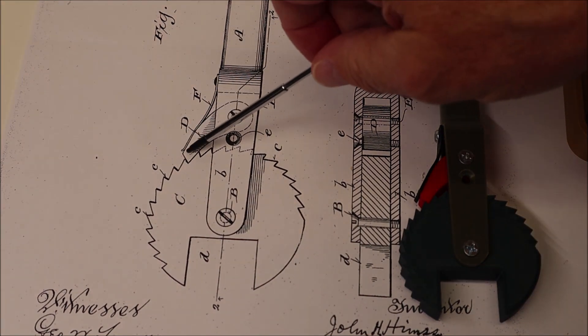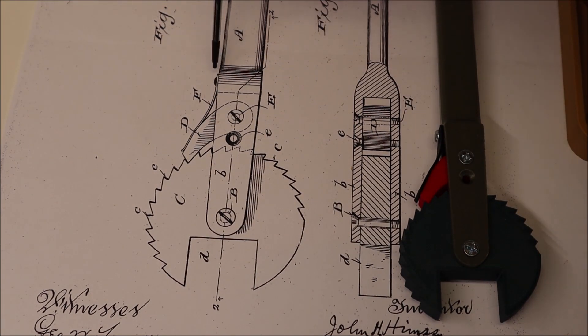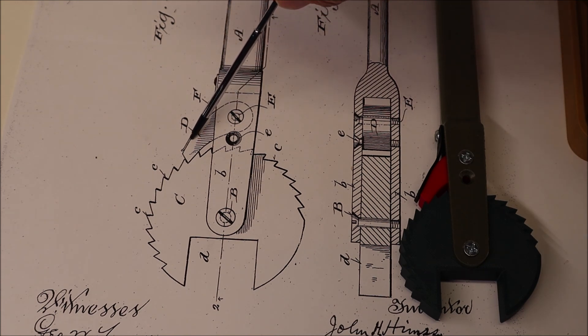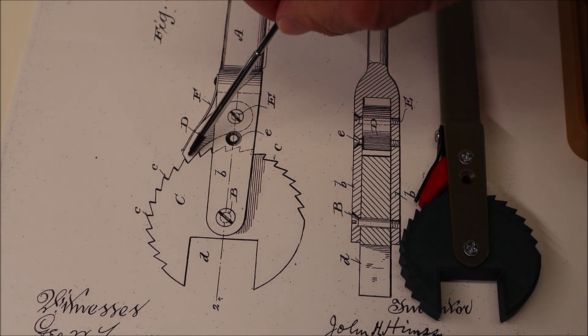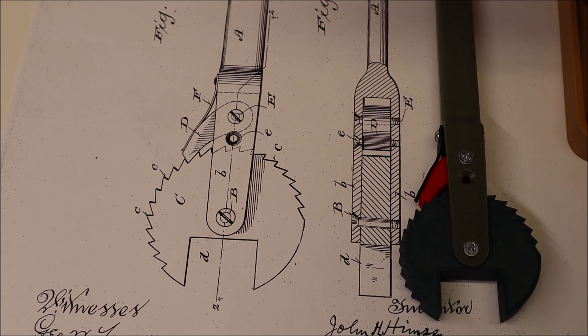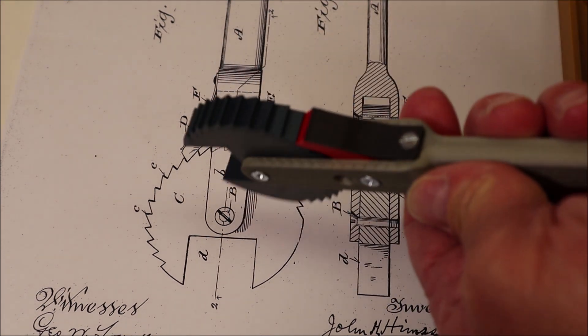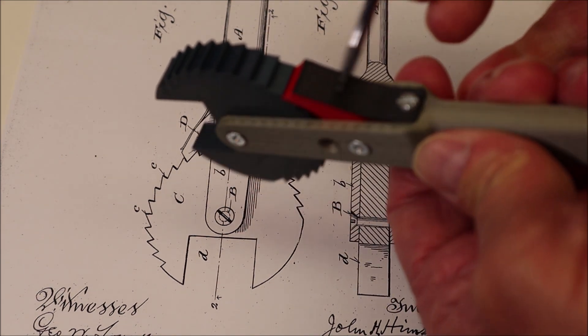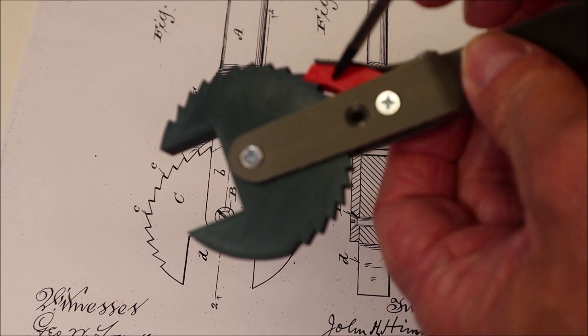There's this flat spring F that's attached to the handle here and that holds this pawl against disc C and engages the teeth. And here's spring F holding this against the teeth.